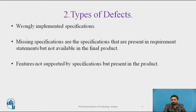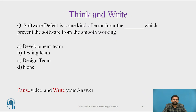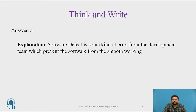Features not supported by specifications but present in the product represent something extra — this is also considered a type of defect. Here is a question: a software defect is some kind of error from the blank which prevents the software from smooth working. The answer is from the development team.